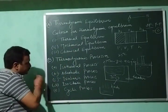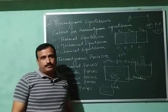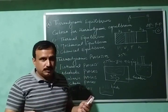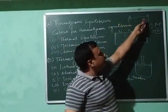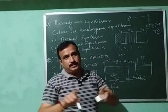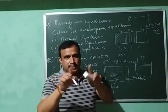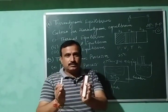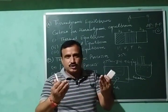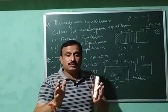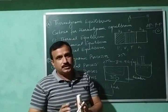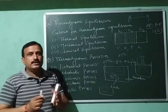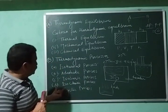The next process is the isochoric process. If in a process volume is kept constant — that is, there is no change in volume — we go from A to B but the volume remains the same. There is no expansion or contraction of the gas, so dV = 0. That process is called the isochoric process.